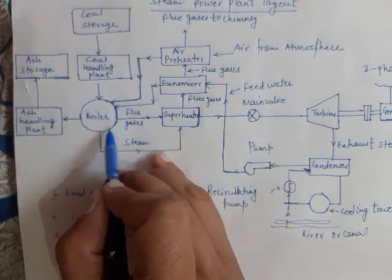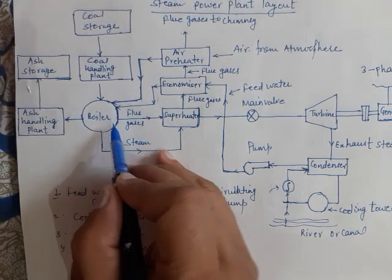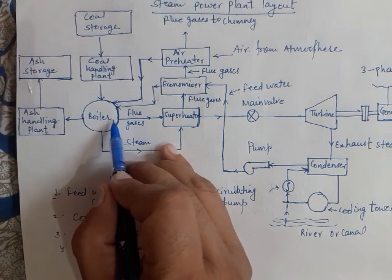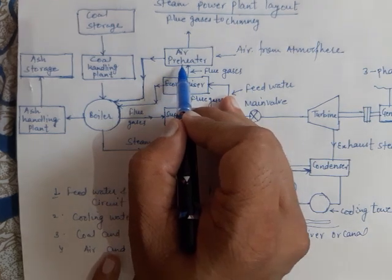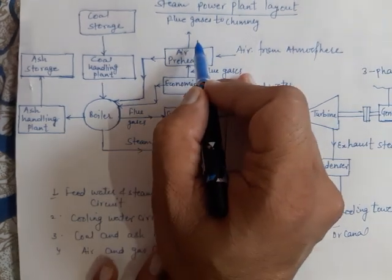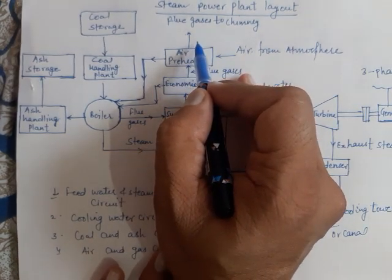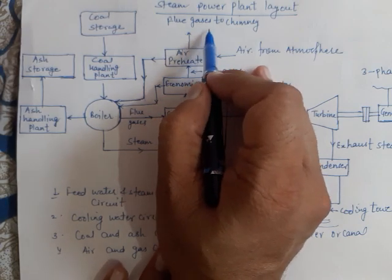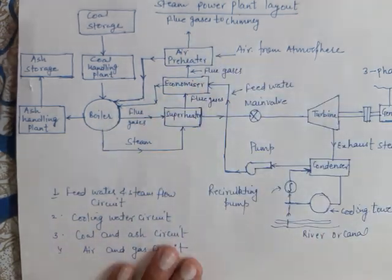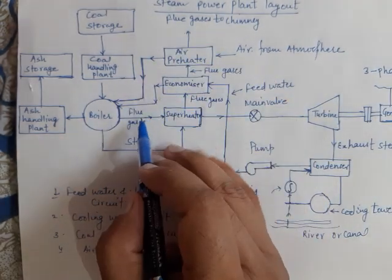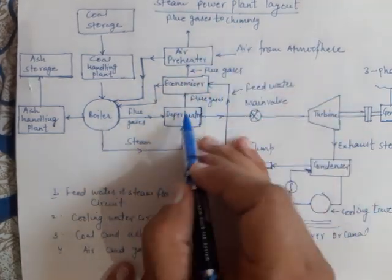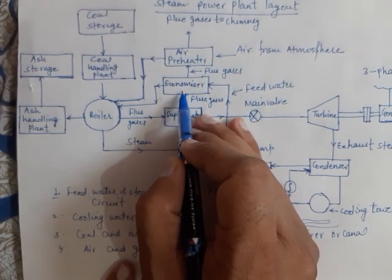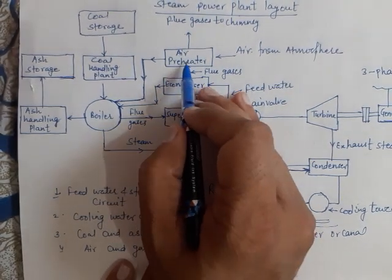The hot flue gases generated inside the boiler are allowed to flow through the superheater, economizer, and air preheater, and are then discharged to the atmosphere with the help of a chimney.